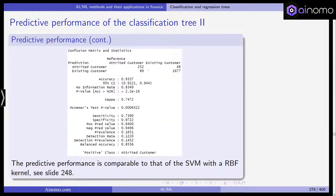We get in the confusion matrix 252 and 1677 customers which have been classified correctly. The accuracy is 93% with this confidence interval and corresponding information on the no information rate, kappa sensitivity and so on. The predictive performance is actually comparable to the one of the support vector machine that uses a non-linear radial kernel.